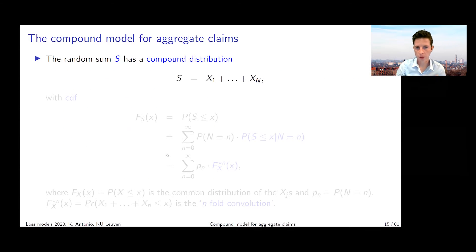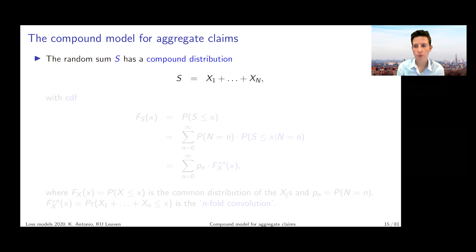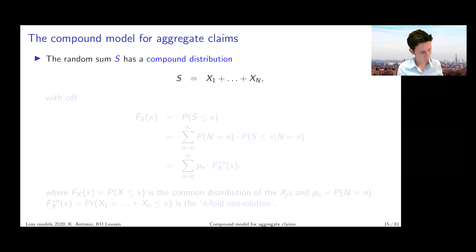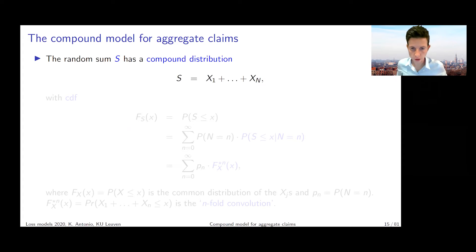If I look at the random sum — the compound sum S — I'm working with the sum of X1 through XN. One question I can ask is: what about the distribution of S? If we start thinking about this, we quickly engage once again with the concept of a convolution.